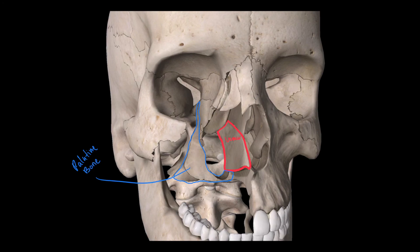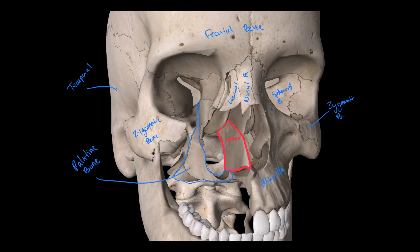For a quick review: we have our zygomatic bone, frontal bone, nasal bone, lacrimal bone, sphenoid bone, maxilla, zygomatic on this side, temporal bone in this area as well as this part, and the ethmoid bone. Those are most of the bones of the head.